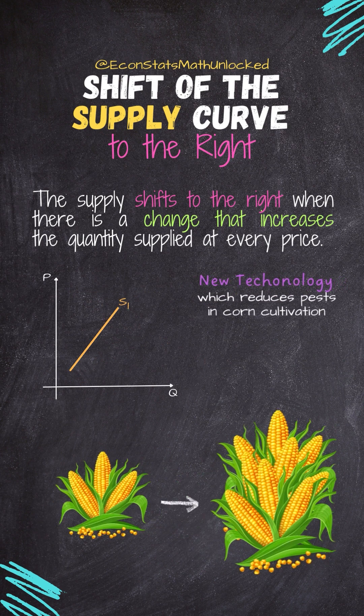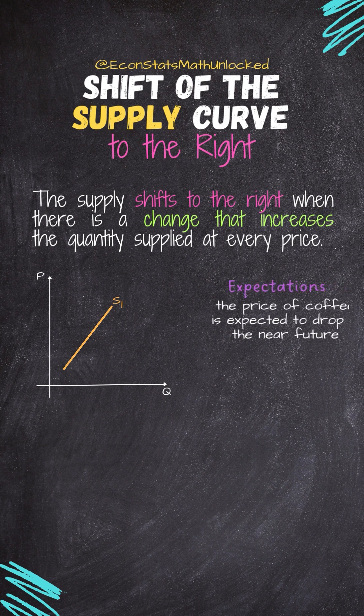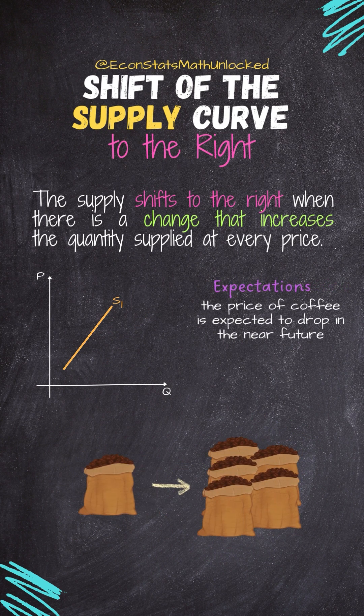New technology is another factor. Productivity increases, leading to an increase in supply, and the supply curve shifts to the right. Additionally, an expectation of a price decrease in the future means the producer takes advantage of higher prices today by increasing the supply now, shifting the supply curve to the right.